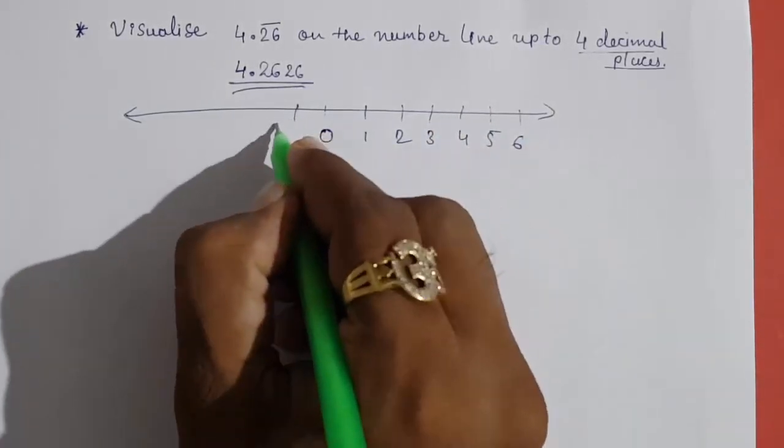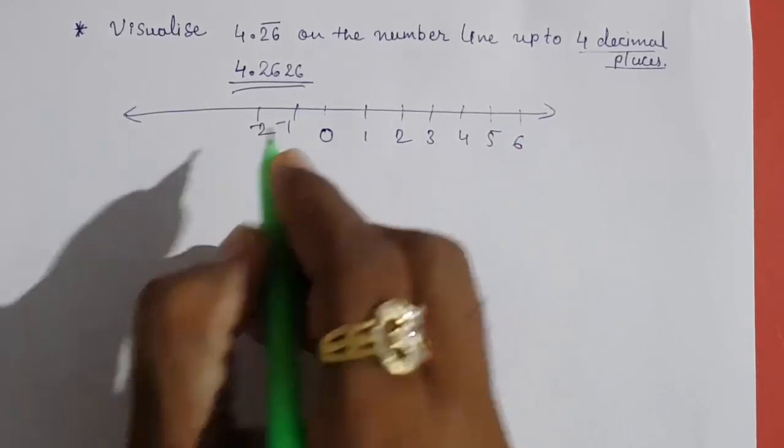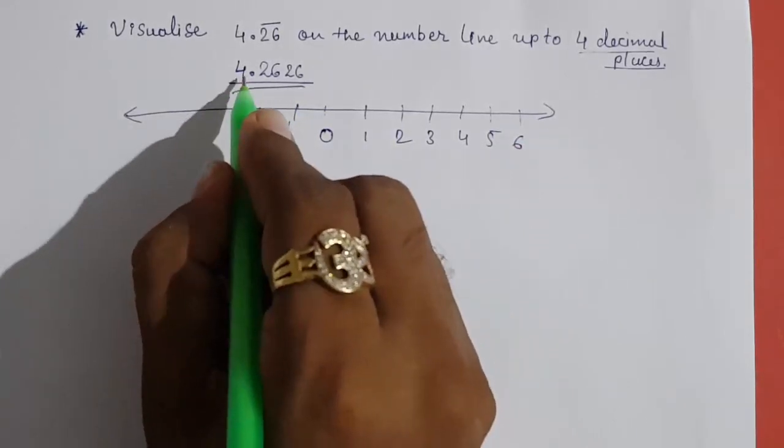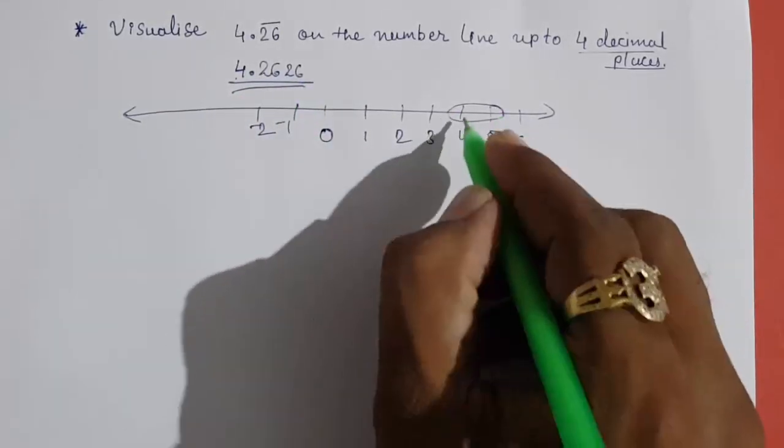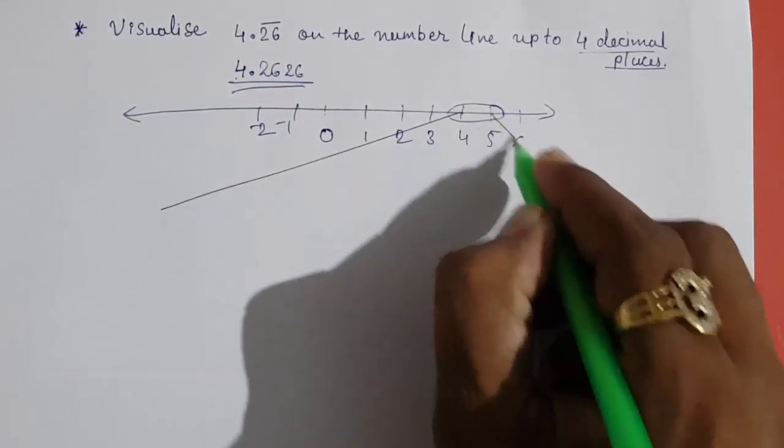Now we have to magnify 4 point something, so this is greater than 4 and less than 5. So we have to magnify between 4 and 5.